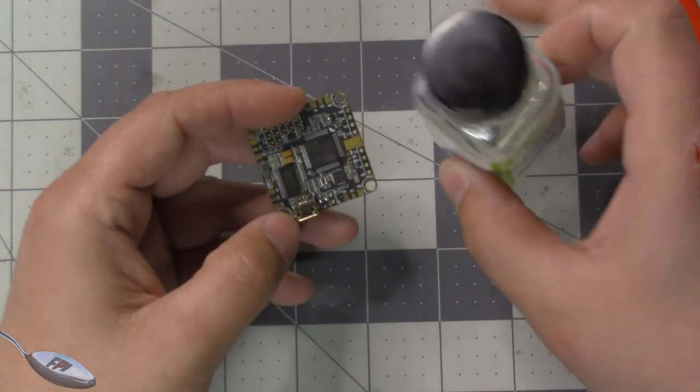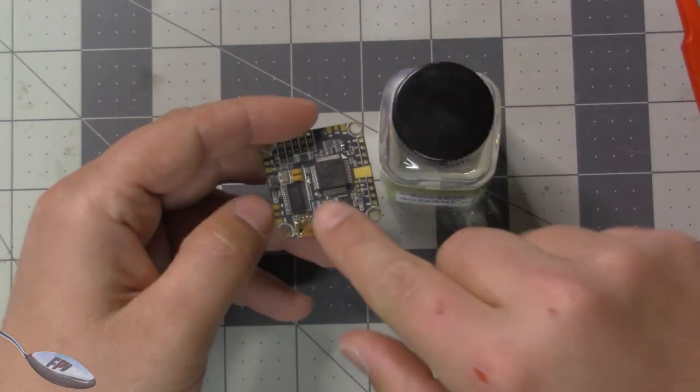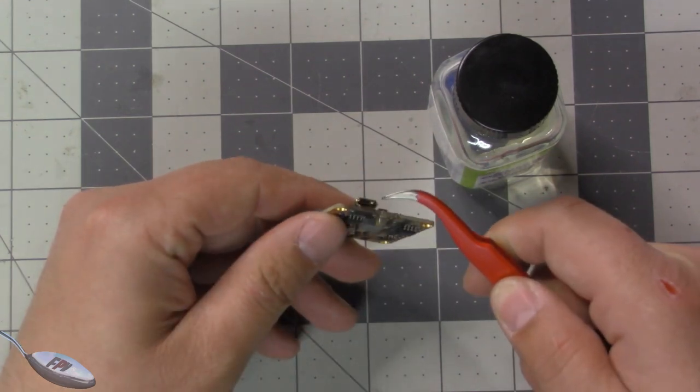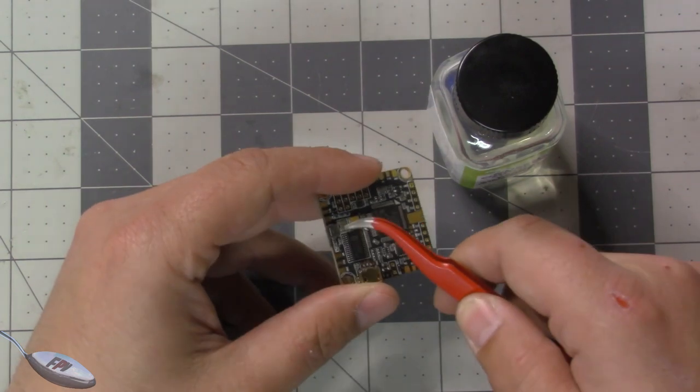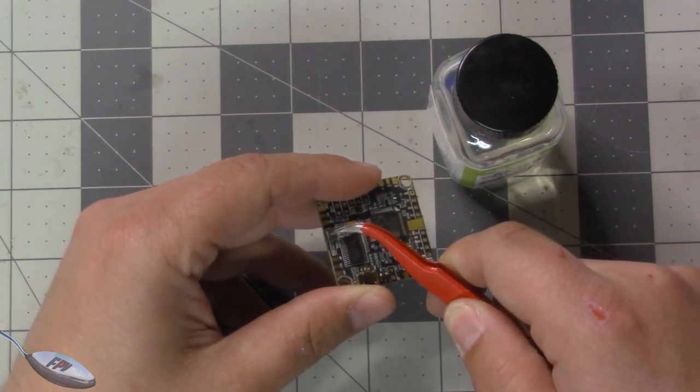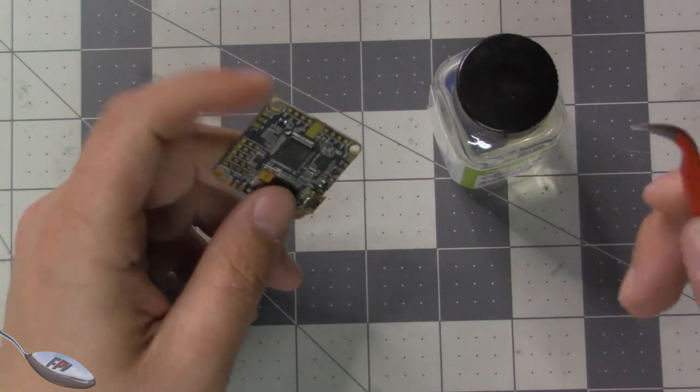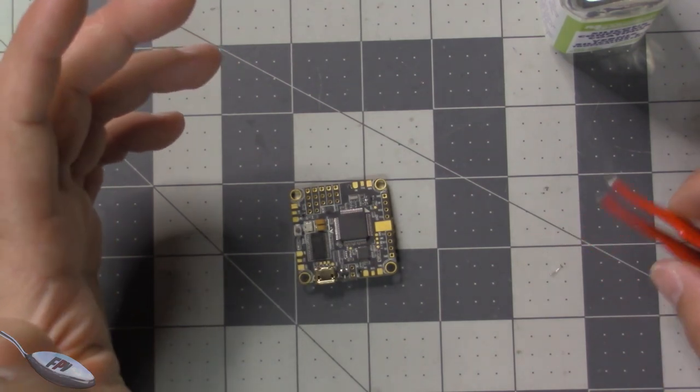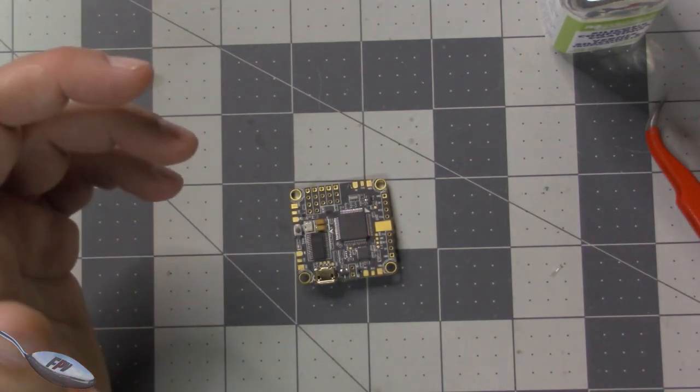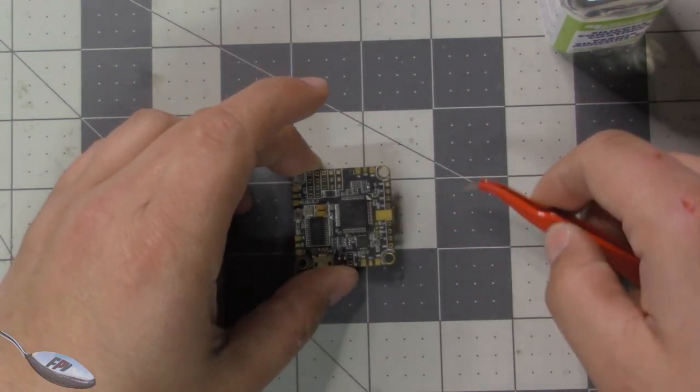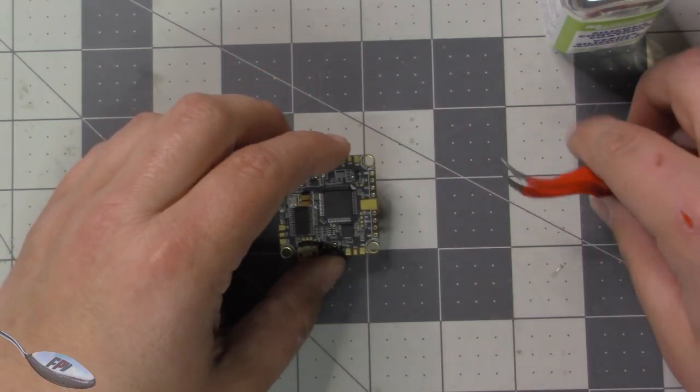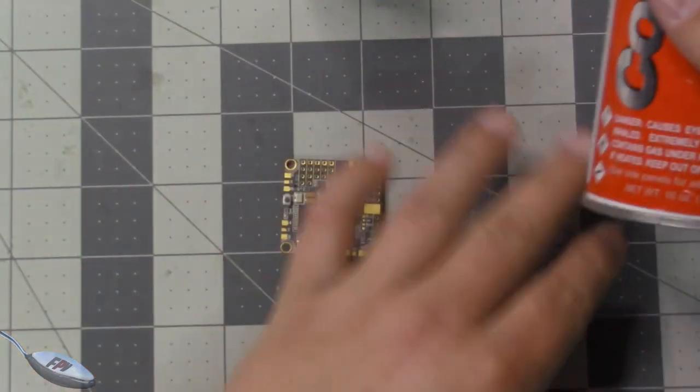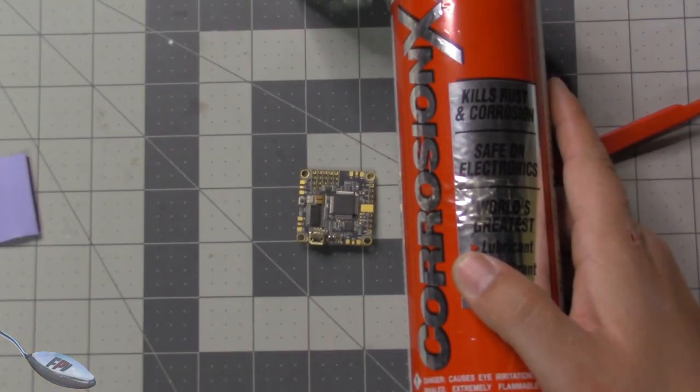So I will take this silicon conformal coating and I'll put it all over everything on the flight controller with the exception of the boot buttons and where the USB plug or anything that has to move, like this button has to function or have something plugged into it. Connectors that are going to stay permanently connected, like the ones on your video transmitter or if your flight controller has connectors on it, it's fine to put this stuff over it. But you probably still want to use the Corrosion X.